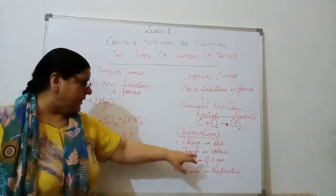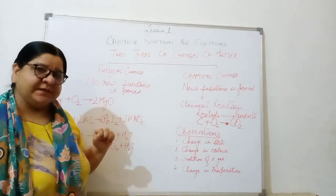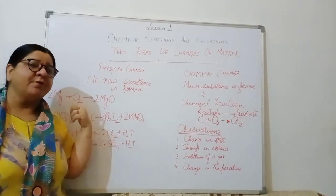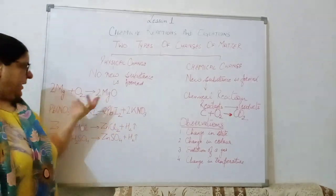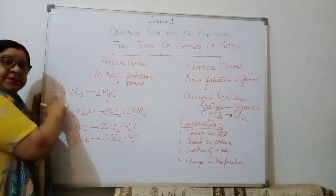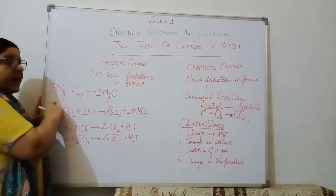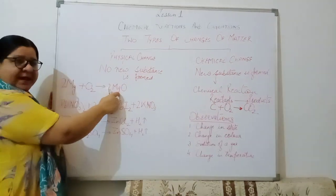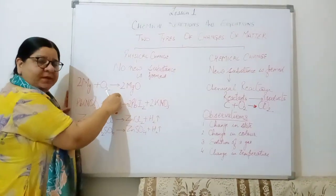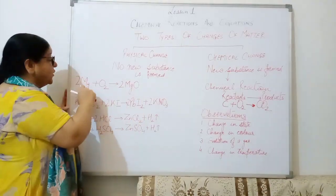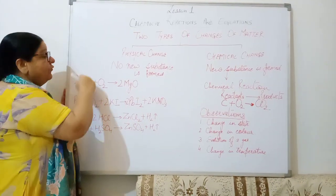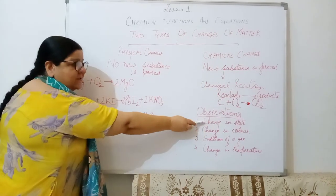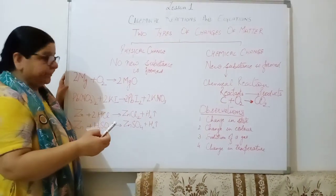Now, how will we come to know about it? Like for the first thing, if we take change in state. Now, if we burn a magnesium ribbon, a strip of magnesium ribbon, you have already done this experiment in class 9th also. We take a solid strip of magnesium ribbon and burn it in the presence of oxygen. We get magnesium oxide which is in the form of ash. Here, there is a change of state. We took solid magnesium ribbon which turned into powdered form. So this is the example for the first observation that is change in state.